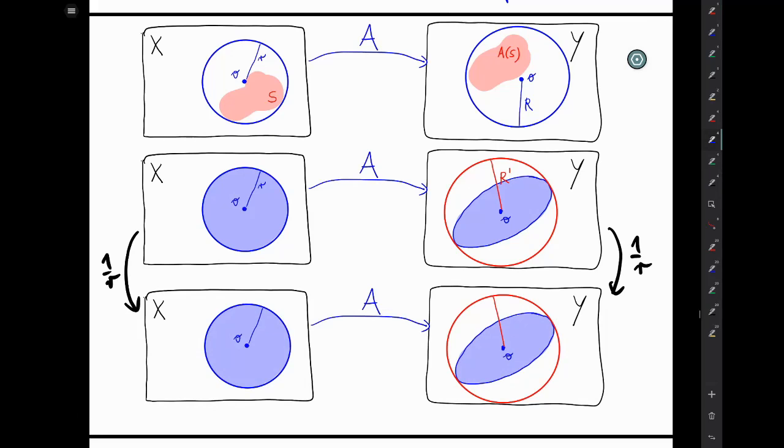instead of a disk around 0 with radius r, we are looking at the unit disk, which is the disk around 0, the origin with radius 1. So we are only talking about one set anymore. And on the right,